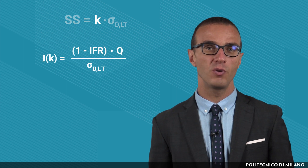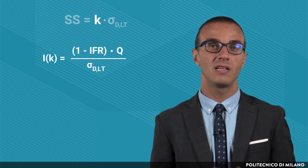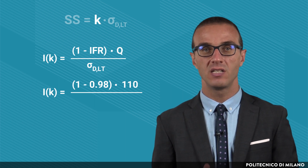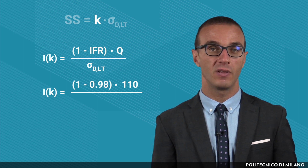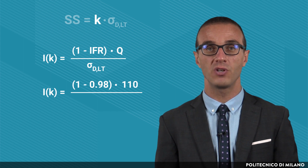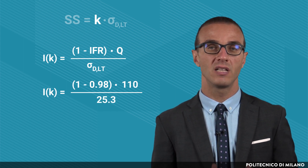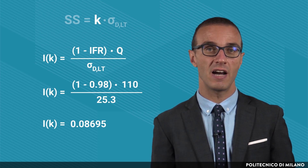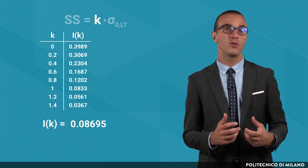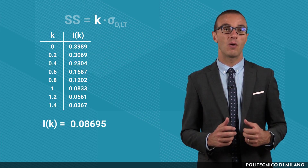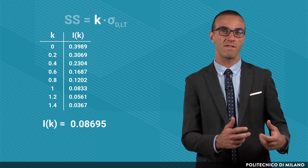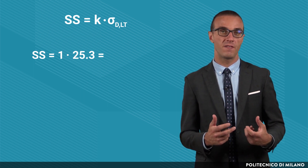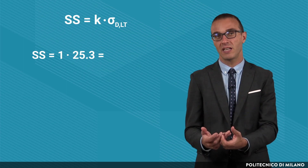The first step to find K is the computation of I(K). Using the formula previously seen, it is found as the ratio between two parts. At the numerator: 1 minus the fill rate, which is 0.98, multiplied by the order quantity, 110 pcs. At the denominator: the composite sigma, 25.3. The result is 0.08695. Then, we look for this value of I(K) in the normal loss integral table. If I(K) equals 0.08695, the coefficient to be selected is K equal to 1. Finally, we multiply 1 by 25.3, obtaining the safety stock value of 25.3 pcs.